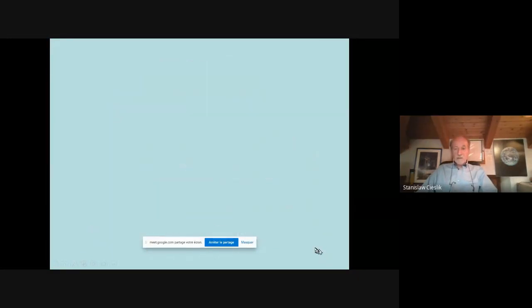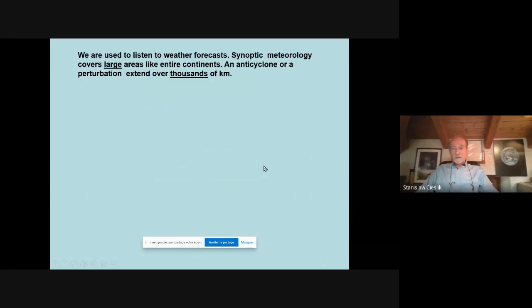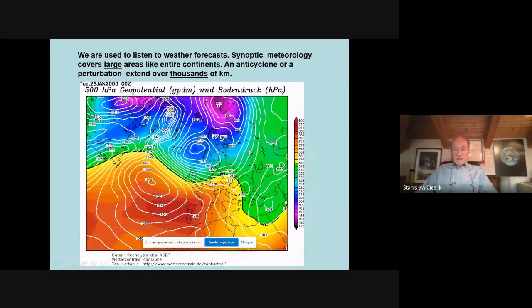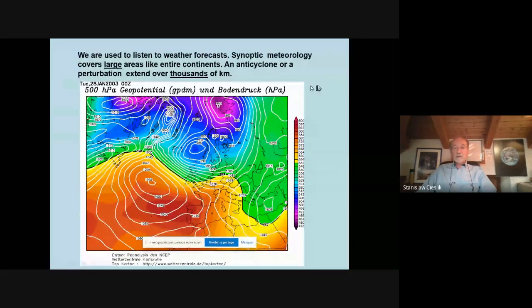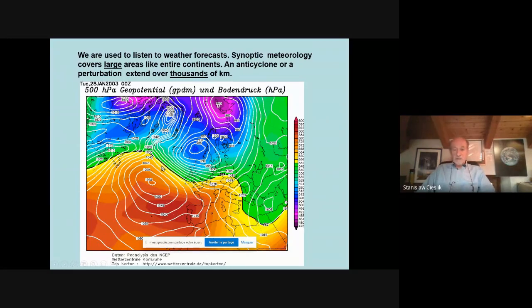The next slide will illustrate the difference between the large-scale meteorology — the synoptic one — and micro-meteorology. The synoptic meteorology covers large, very large areas, areas like entire continents. We have anti-cyclones and perturbations which can extend over thousands of kilometers, as you can see from this meteorological map.